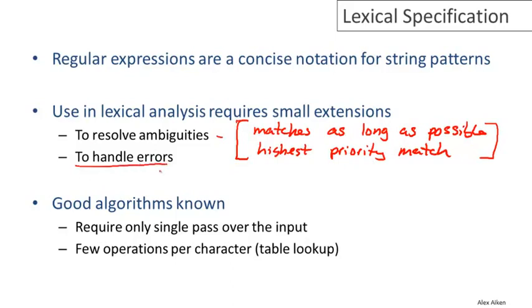we typically write out a catch all regular expression that soaks up all the possible erroneous strings and give it the lowest priority. So that only triggers if no valid token class matches some piece of the input. And finally, we haven't discussed these yet, but there are very good algorithms known for implementing all of this. In fact, we'll be able to do it in only a single pass over the input and with very few operations per character with just a simple table lookup. And this will be the subject of our future videos.